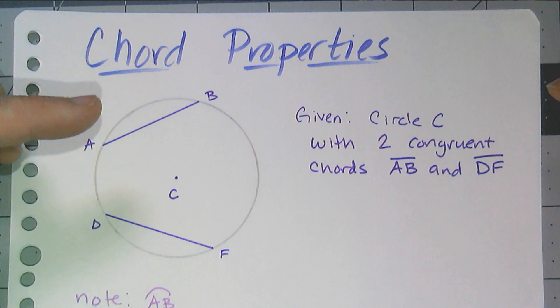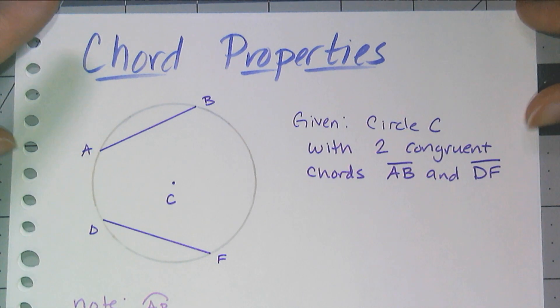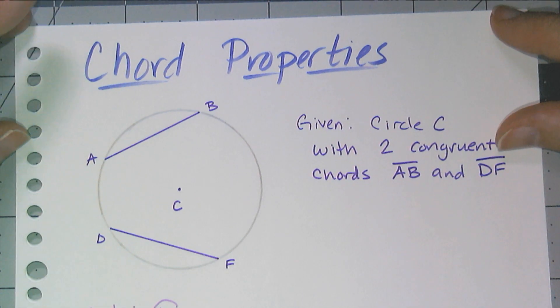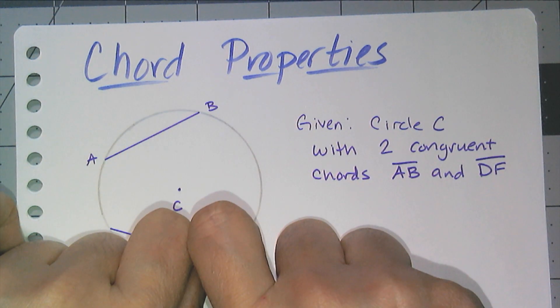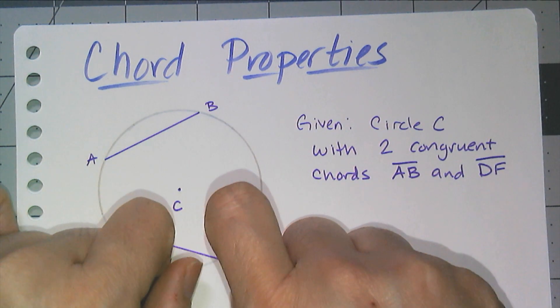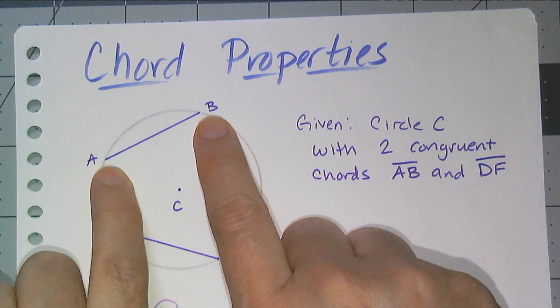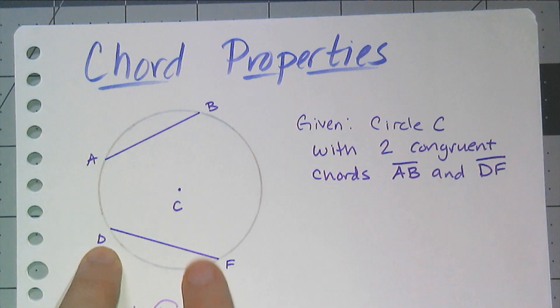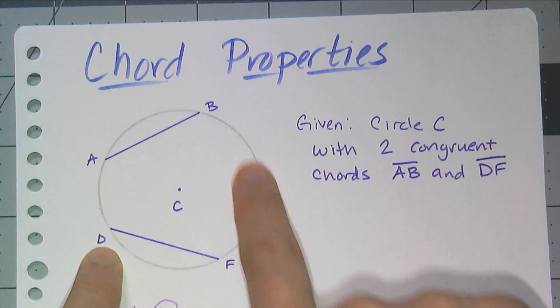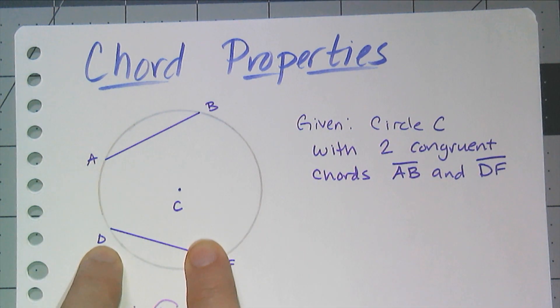Hey y'all. In this video we're going to actually start our study of circles and their properties, specifically looking at chords and the properties of chords. So we have to remember what a chord is. A chord is a line segment with endpoints on a circle. So AB is a chord and DF is a chord.